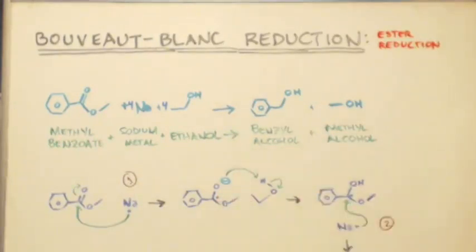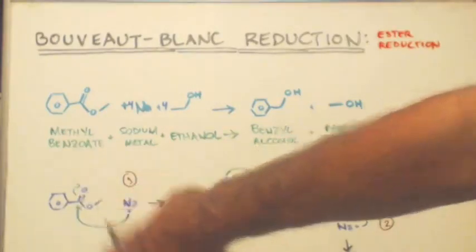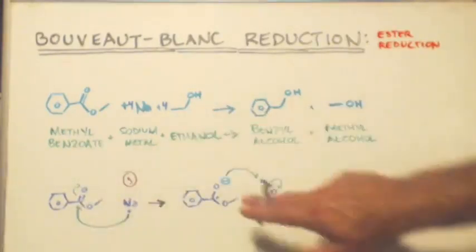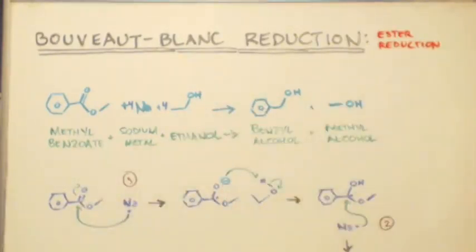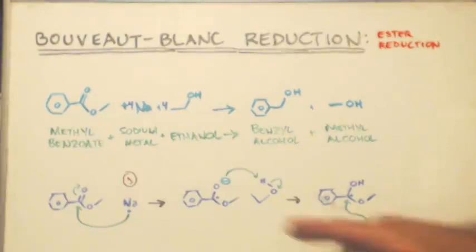Now when that happens, the double bond, the electrons from the double bond, they jump up on top of the oxygen and make it negative. I'm trying to distribute the electron density more evenly, so that jumps up to get your negativity up there.